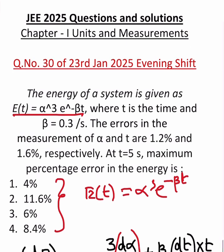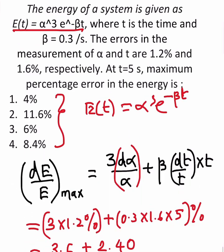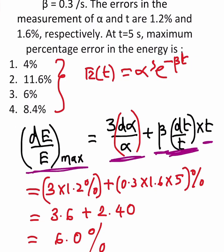Therefore, let us see error of this energy: dE by E maximum. So this is what we have taken here because alpha has a power 3, so 3 times the error of alpha, and e has a power of minus beta t.